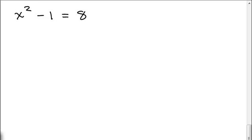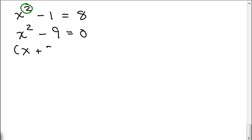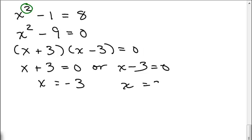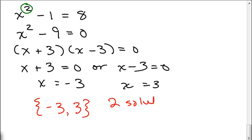Here's another equation where the exponent is 2 — this is a quadratic. One way to solve it is to set it equal to 0: subtract 8 from both sides to get X squared minus 9, then factor. Set each factor equal to 0, and you get negative 3 or 3. So this equation has two solutions — negative 3 and 3 — or I could say I have two roots.